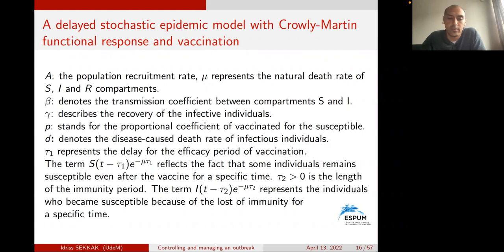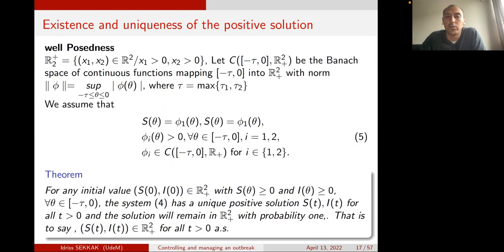For the delay terms, τ₁ describes the efficacy period of vaccination for S, and τ₂ describes the loss of immunity for I. As a first result, we prove the existence and uniqueness of a positive solution. Let C be a Banach space of continuous functions mapping from [−τ, 0] into R₀^+. For any initial values S₀ and I₀, where τ = max(τ₁, τ₂), the system has a unique positive solution for all t ≥ 0, and the solution remains in R²₊.